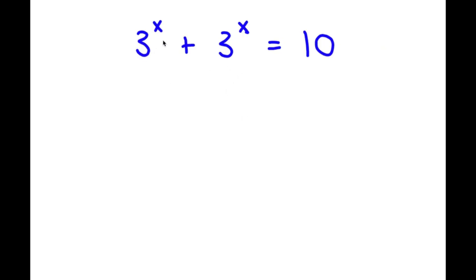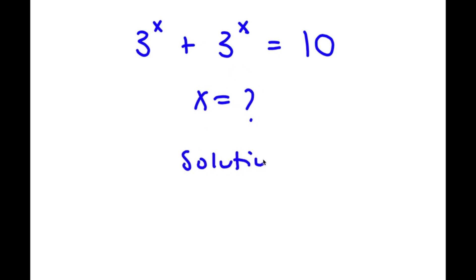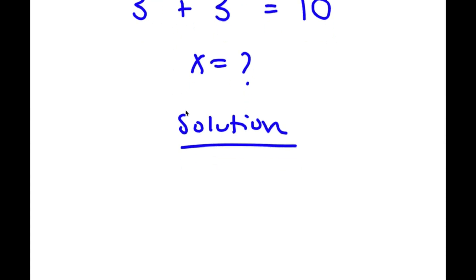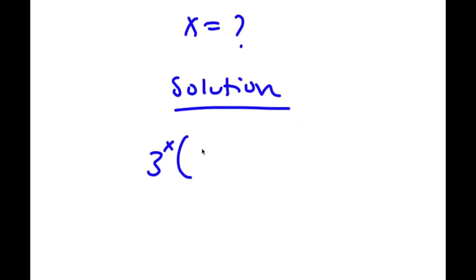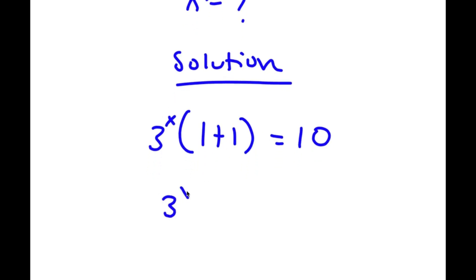In this problem, I have 3 to the power of x plus 3 to the power of x equals 10, and I want to find the value of x. I'm going to factor out 3 to the power of x from the left-hand side. So I have 3 to the power of x times 1 plus 1 equals 10. Since 1 plus 1 equals 2, I now have 3 to the power of x times 2 equals 10.